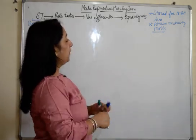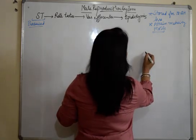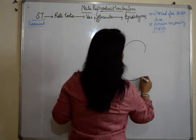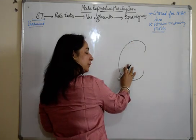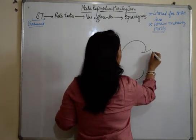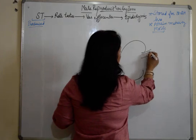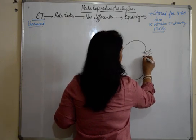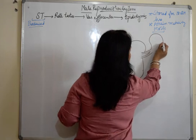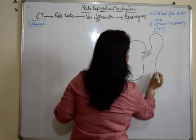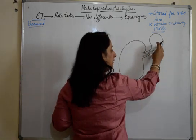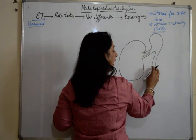Now the structure of epididymis. This is the testes — we have done the structure of testes. Here we have the rete testes, and here we have the vasa efferentia which ends up in this structure. This part is the head, the body, and the tail.